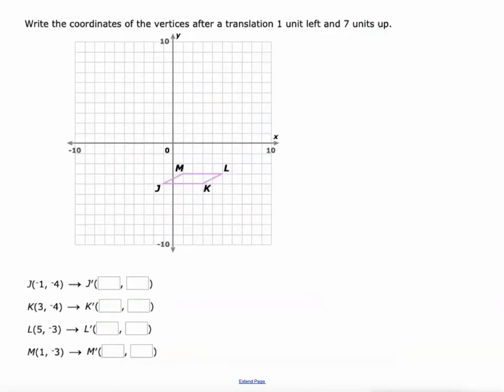One more. Let's do a translation of one unit left. We know that that's going to be subtract one from all of our x values. Negative one minus one is negative two, three minus one is two, five minus one is four, one minus one is zero. And then seven units up means add seven to our y values. Negative four plus seven is positive three, negative four plus seven is positive three, negative three plus seven is positive four, negative three plus seven is positive four. Plot those points. Make sure they come out right.